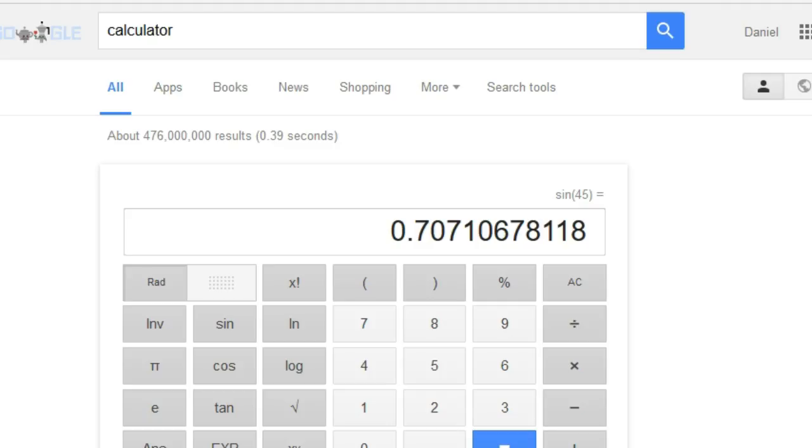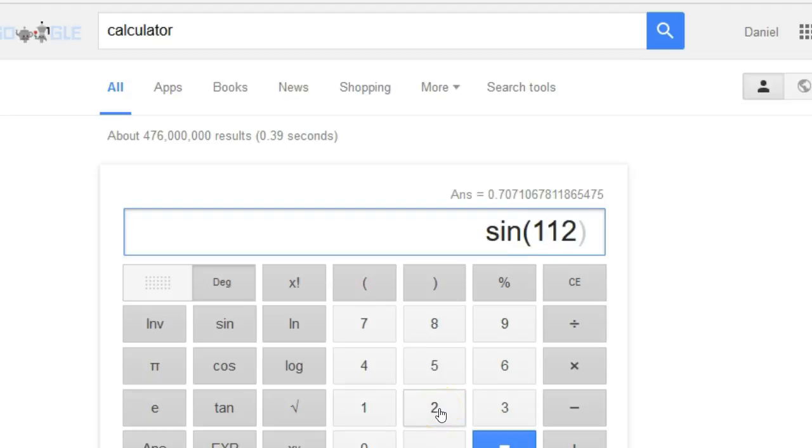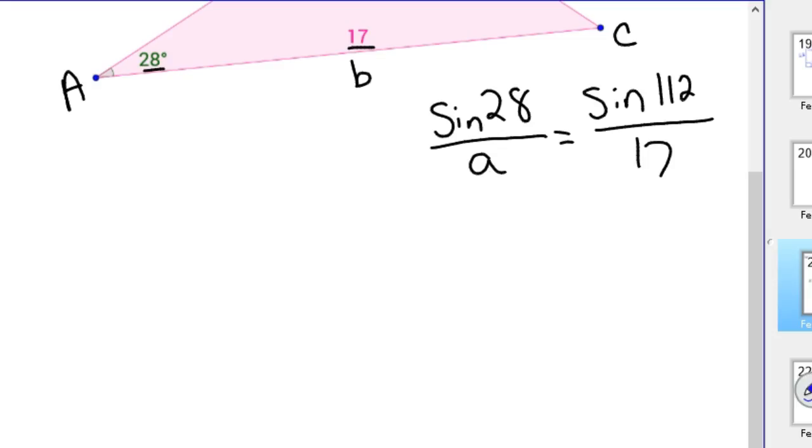Then to solve that, you just get your calculator out and find sine of 28 and find sine of 112. With Google, if you use Google as your calculator, make sure that it's always defaults to radians. So make sure you know what angle you're dealing with, either degrees or radians. We want it in degrees. So we'll type in sine of 112, hit equals. So that's .9272.